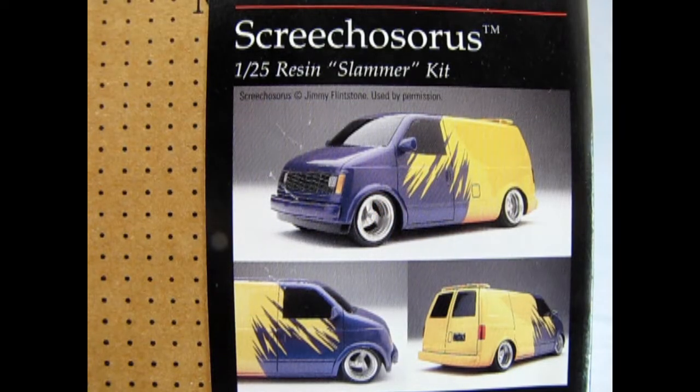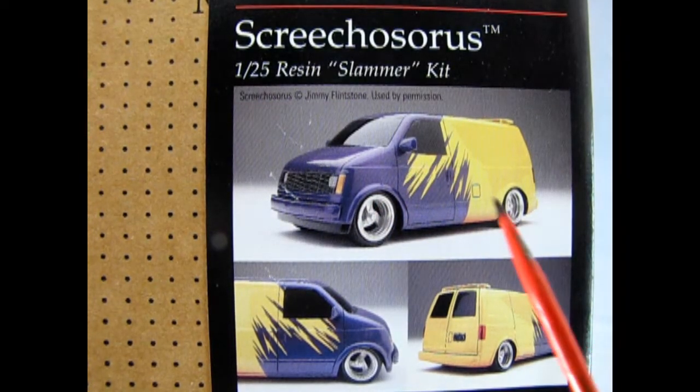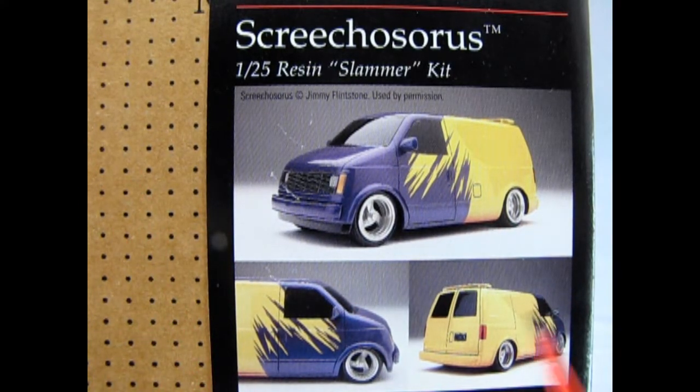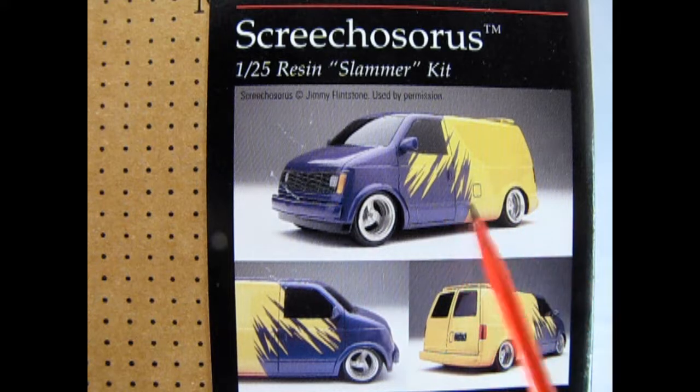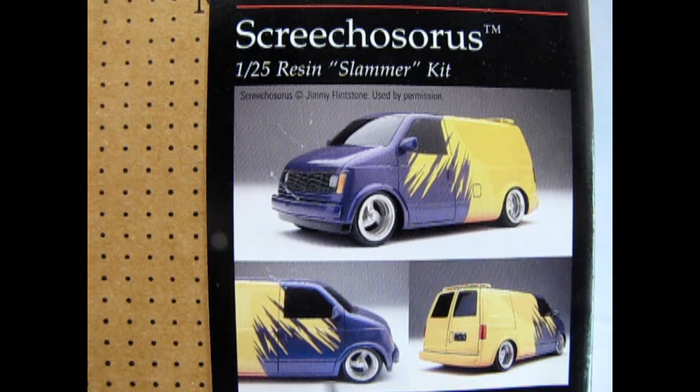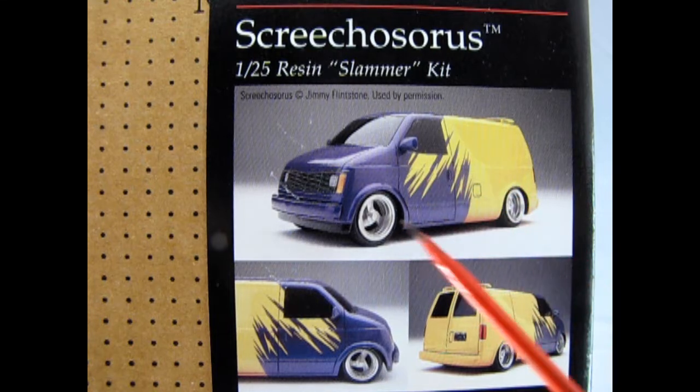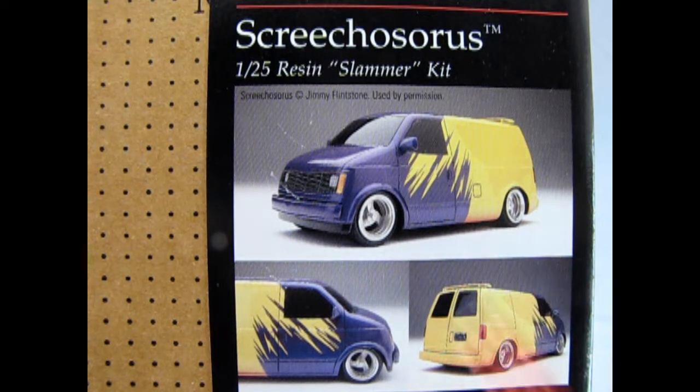On this side of the box we can see some more images of the Screechosaurus. This almost looks like it's on a pegboard wall but it's really just the way the box is. There's a front three-quarter and then the rear three-quarter and a side front view. You also get this nice frisket film here so that you can mask off this amazing paint job.